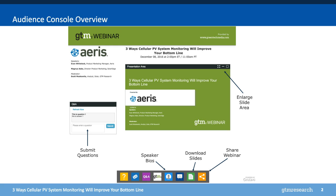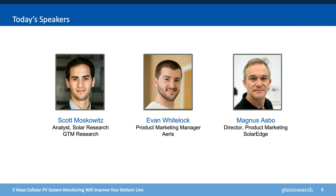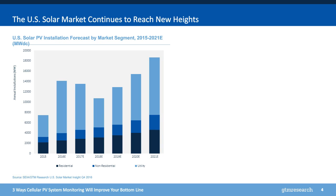For those just joining us, we'll be talking about how cellular PV system monitoring can improve your bottom line in solar. We'll be discussing the different communications choices available to the industry and to system owners and operators for residential and commercial PV systems. We're going to be hearing from Evan Whitelock from ARIS and Magnus Aspo from SolarEdge in just a bit. But first, I just want to set the stage real quick. We're chatting about communications and monitoring for the residential and commercial solar market in the U.S.